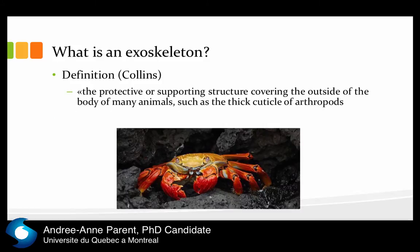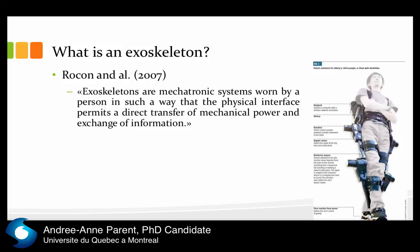When you take the definition in Collins' dictionary, it's a protective or supporting structure covering the outside of the body of many animals, such as crabs — they have many exoskeletons. The same definition for us, for your project, is more an exoskeleton or mechatronic system worn by a person such that the physical interface permits a direct transfer of mechanical power and exchange of information.